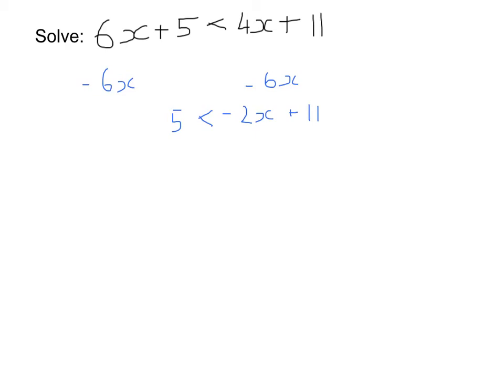giving me minus 6 on the left-hand side of the inequality, and minus 2x on the right-hand side of the inequality. And this is where the trick occurs.